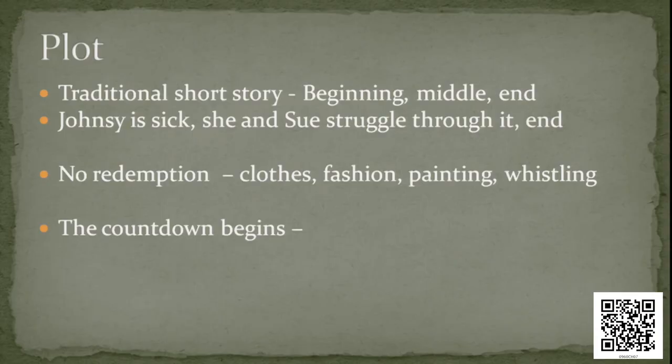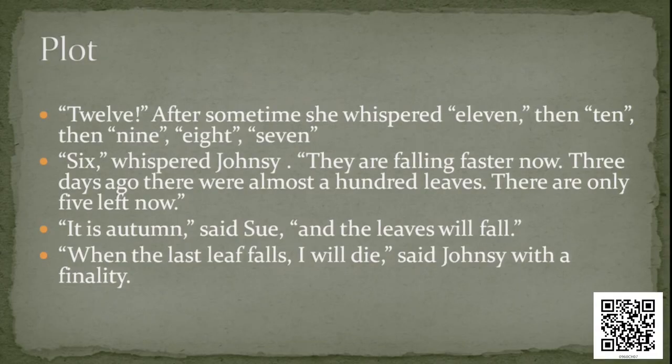As the plot thickens, there is no redemption. Sue tries very hard — she talks about clothes, fashion, painting, and whistles to Johnsy — but nothing would cheer her up. Then Johnsy whispers a countdown: twelve... eleven... ten... nine... eight... seven... six. 'They're falling faster now. Three days ago there were almost a hundred leaves. Now there are only five left.' 'It is autumn,' said Sue, 'and the leaves will fall.'